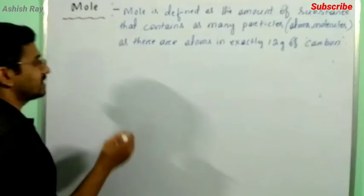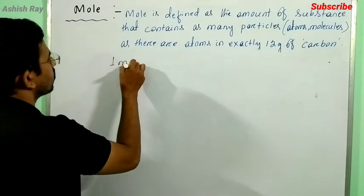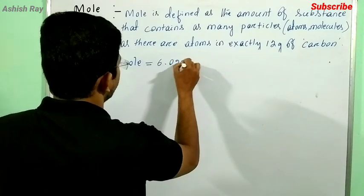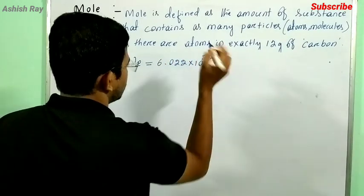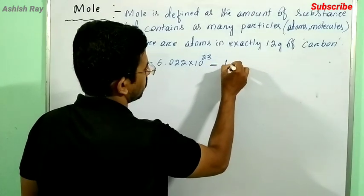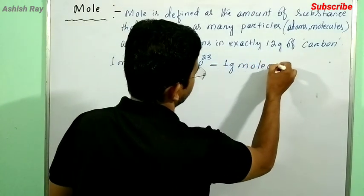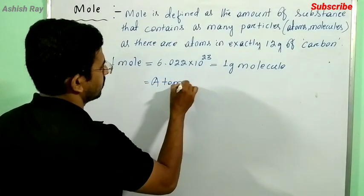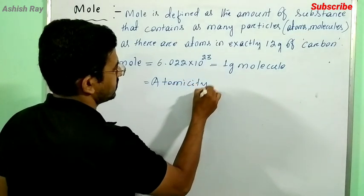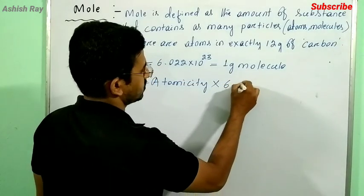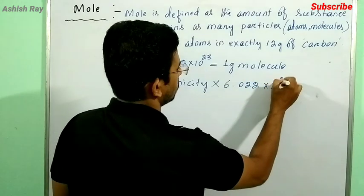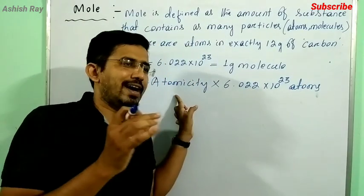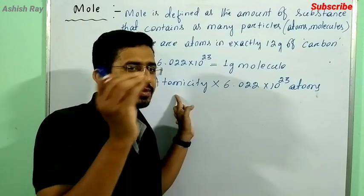So we can write: one mole equals 6.022 into 10 to the power 23, which is equal to one gram molecule. Or we can say atomicity into 6.022 into 10 to the power 23 atoms. So what is atomicity? Atomicity is the number of atoms present in a molecule.